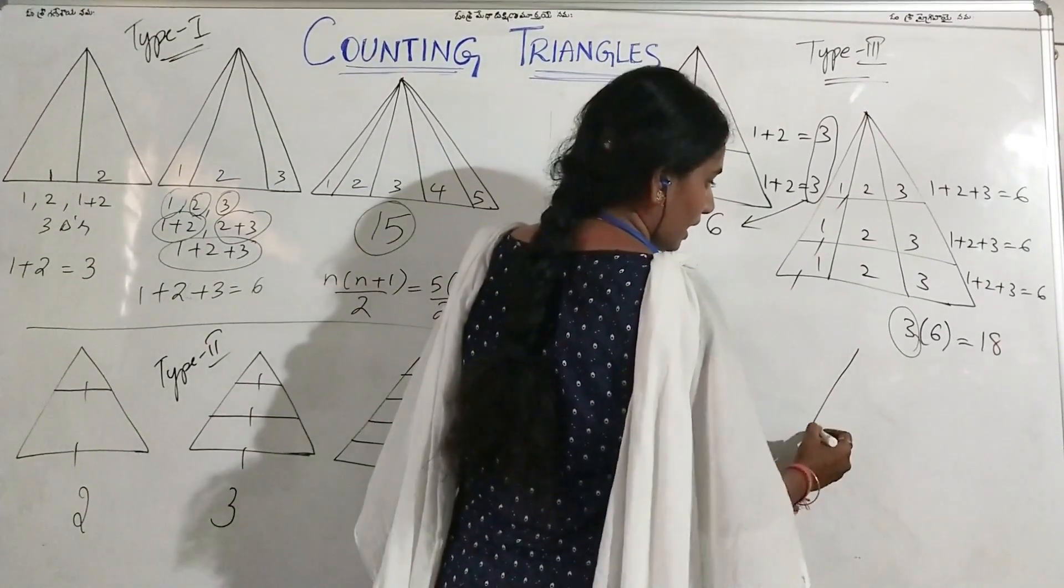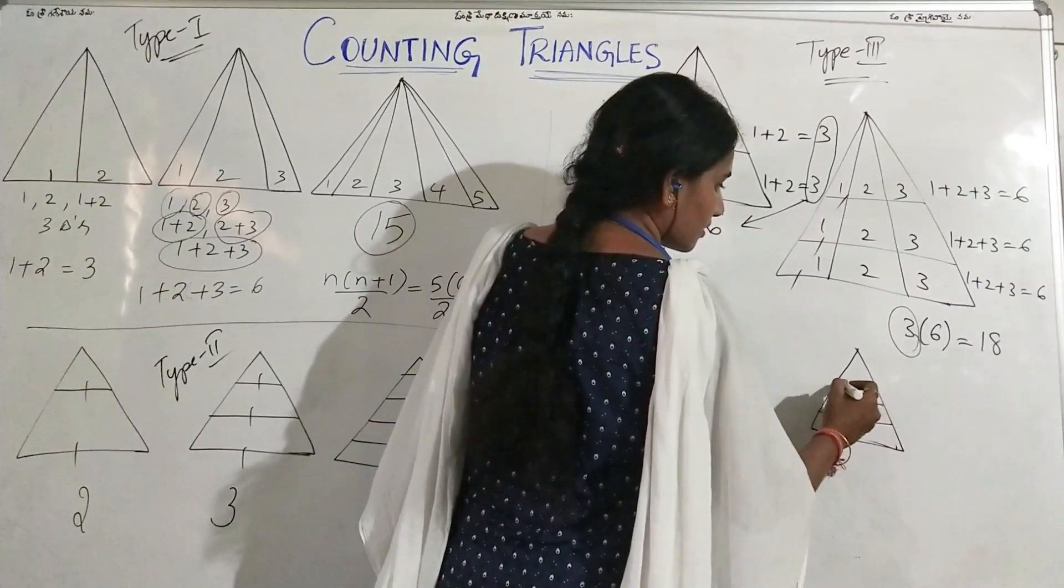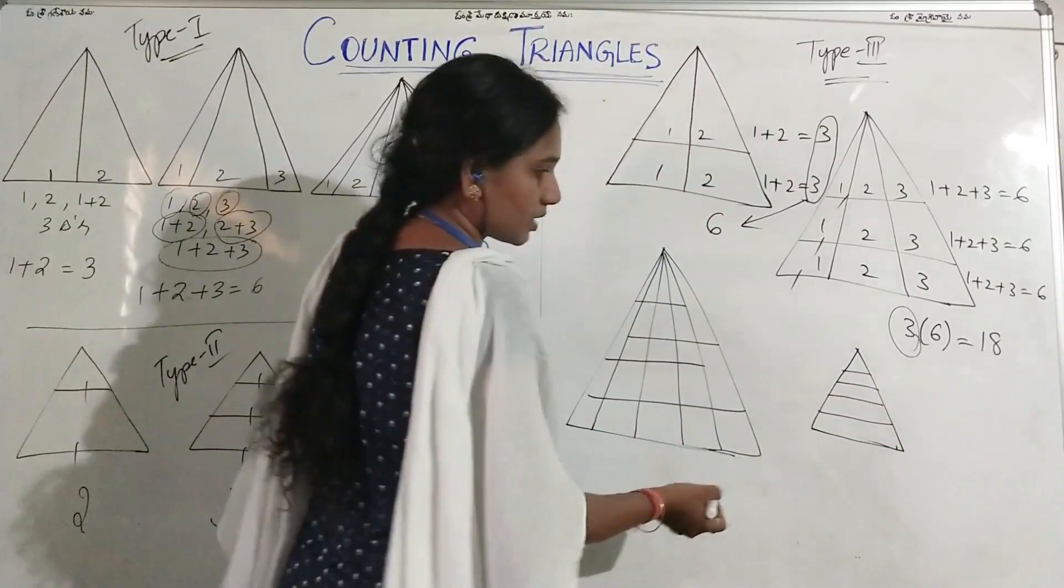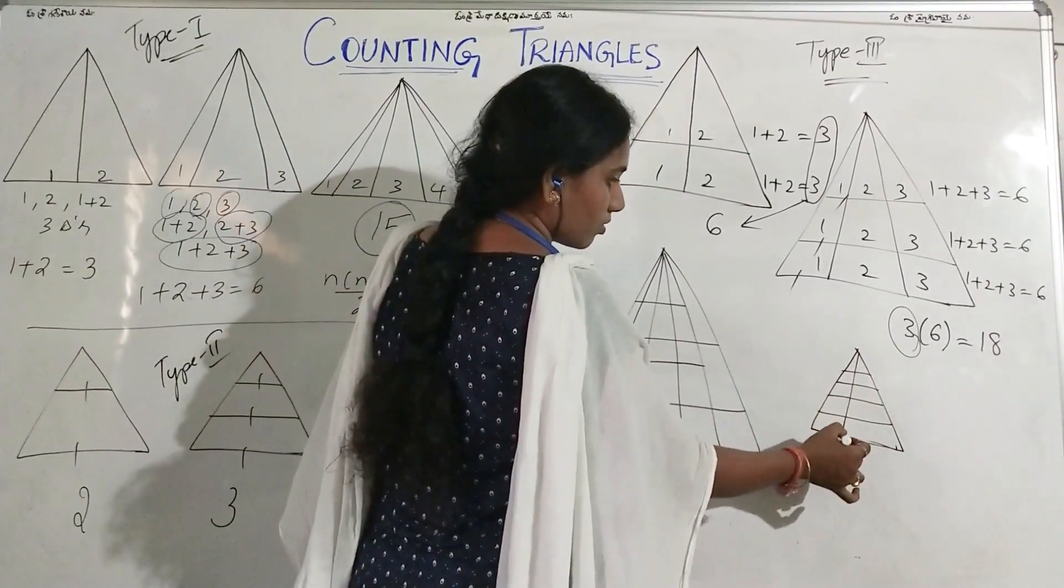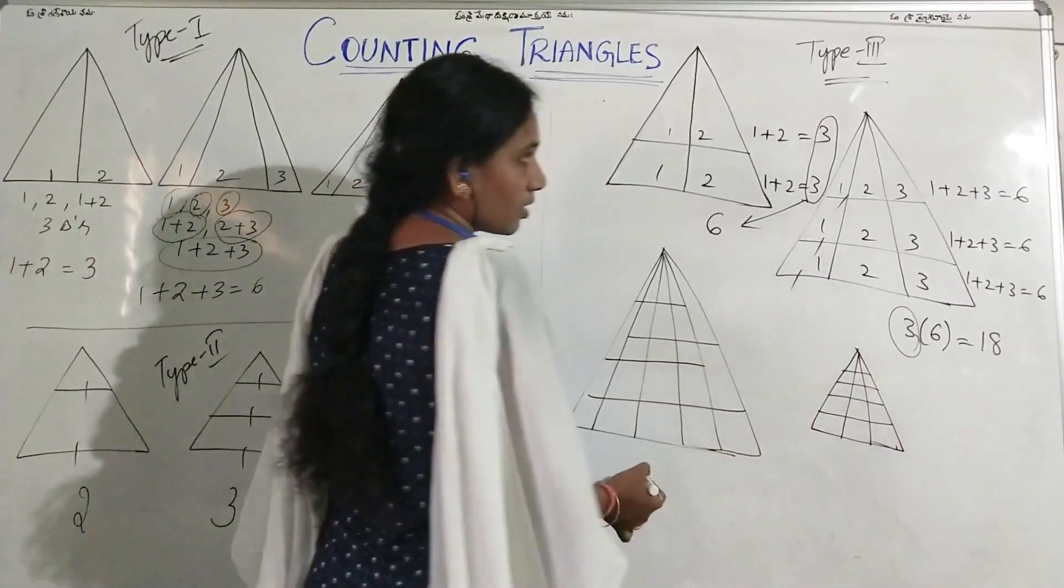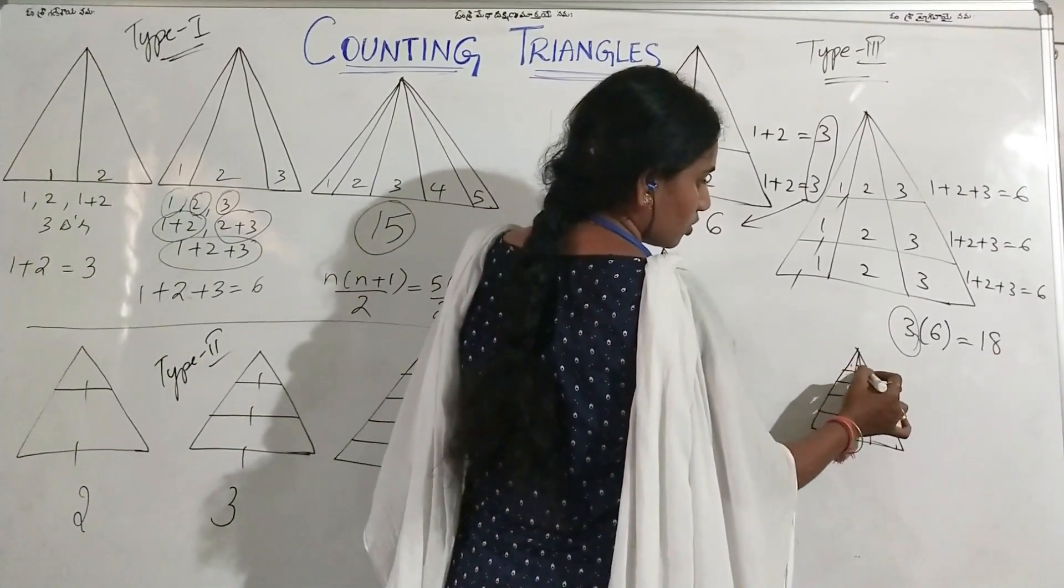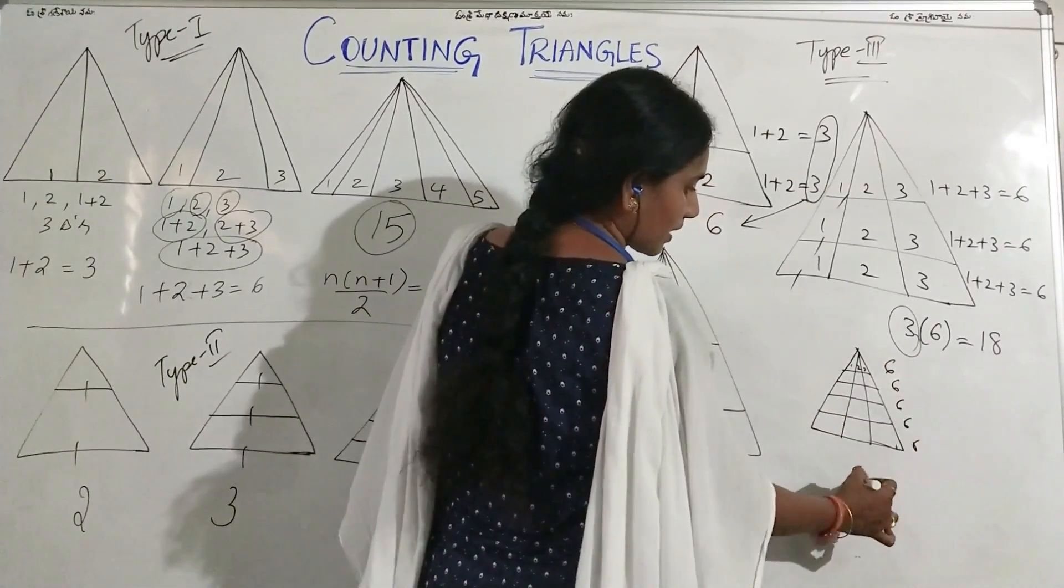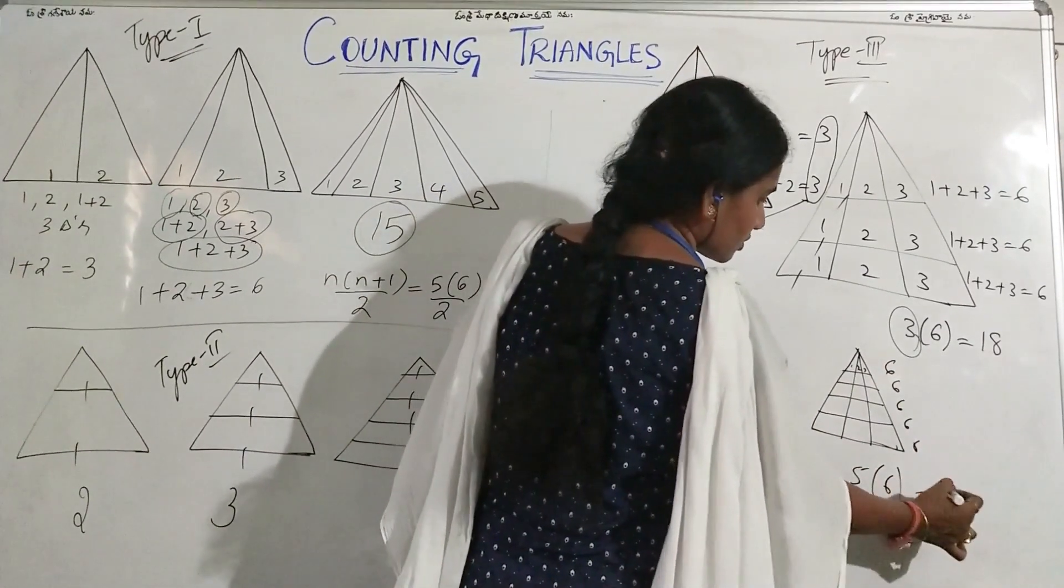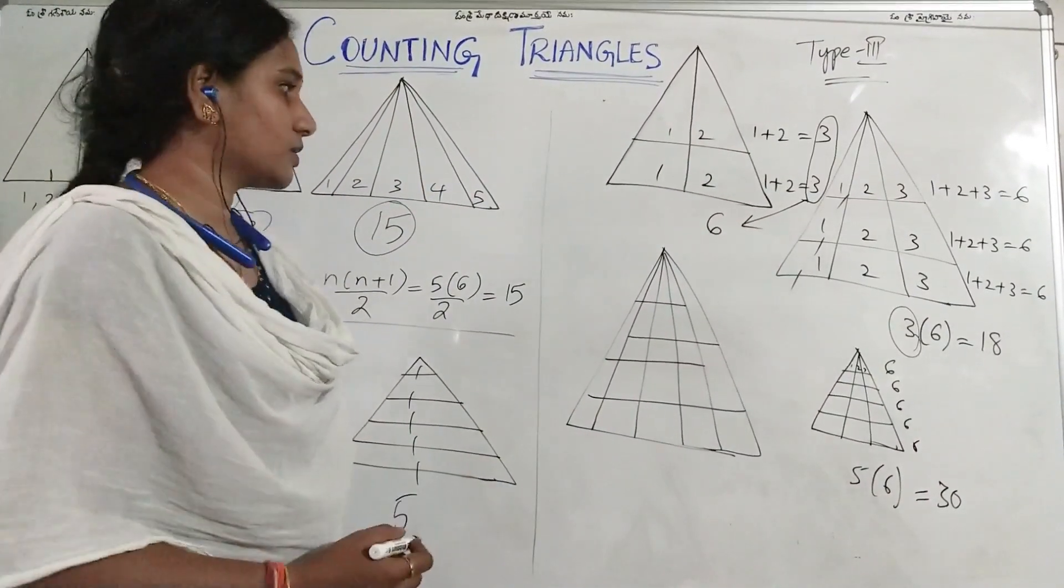So here, if we have 5 lines like this, or 4, but let us suppose 5. If we have around 5 horizontal lines, now all the time I get 6 triangles. So here 6, 6, 6, 6, 6. How many times? 5 times 6. So 5 into 6 is 30. So it is easy if we practice.